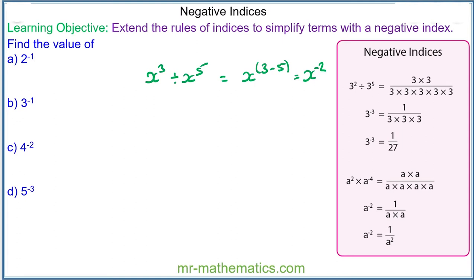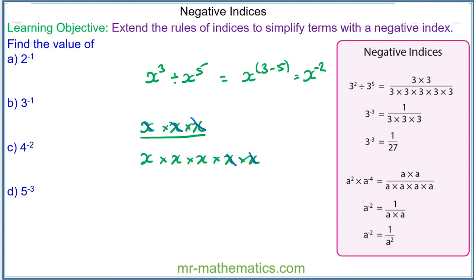If we consider this as a fraction, we can see the same solution in a different format. We have x to the 3, which is x cubed, divided by x to the 5, which is x multiplied by itself five times. We can simplify this fraction by dividing both by x, again and again, so we're left with 1 divided by x squared. So we have x to the negative 2 and 1 over x squared.